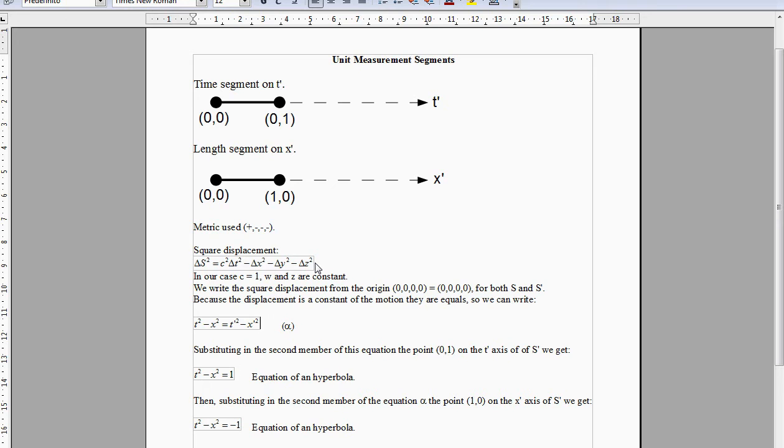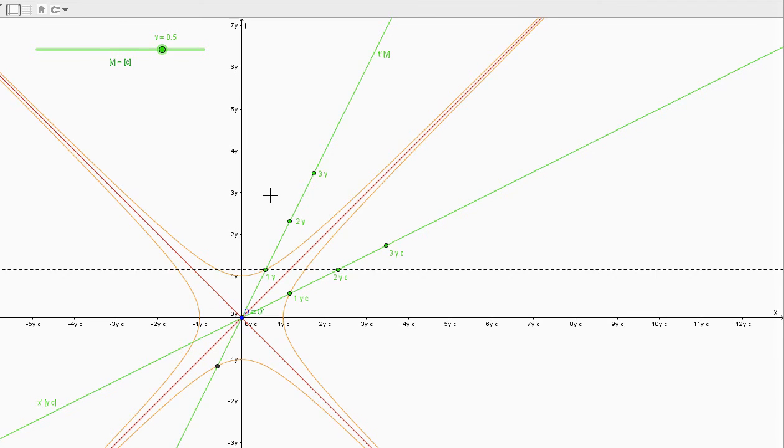So we write the square displacement from the origin for S and S', getting this equation. Substituting the coordinates of the point into the second member, the equation becomes the equation of a hyperbola. On this hyperbola, the point zero one of the t' axis stays on this hyperbola. It's here.